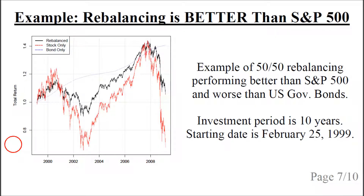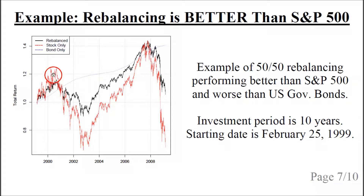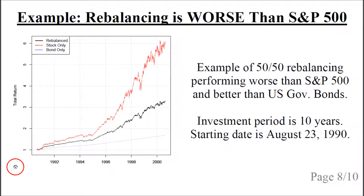It is not always the case. Here's an example where the rebalancing is a lot better than the S&P 500. In this period, the S&P 500 had two crashes: the first between the years 2000 and 2003, and the other around 2008 and 2009.